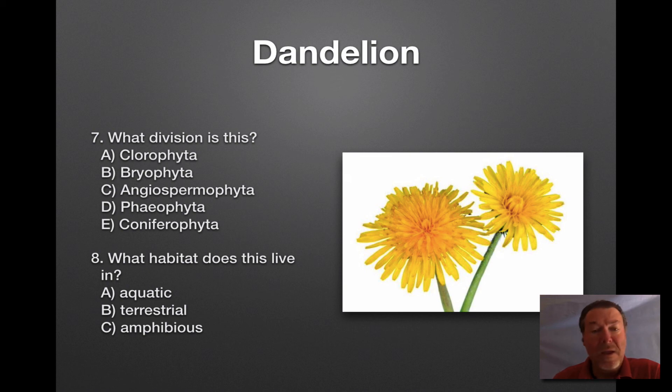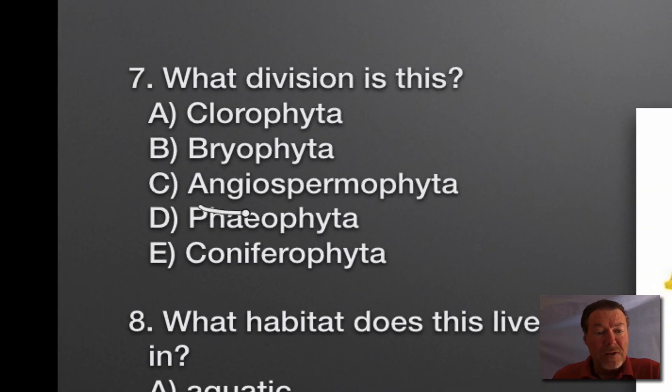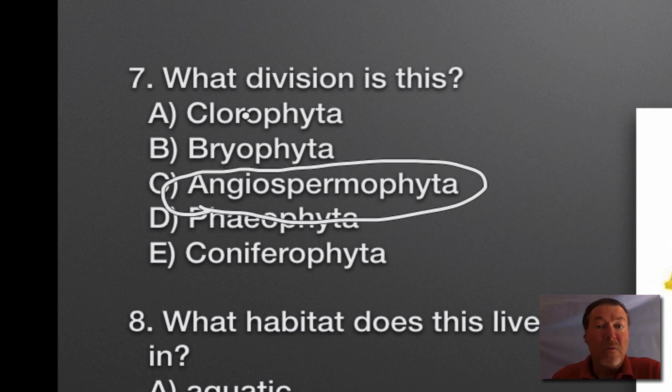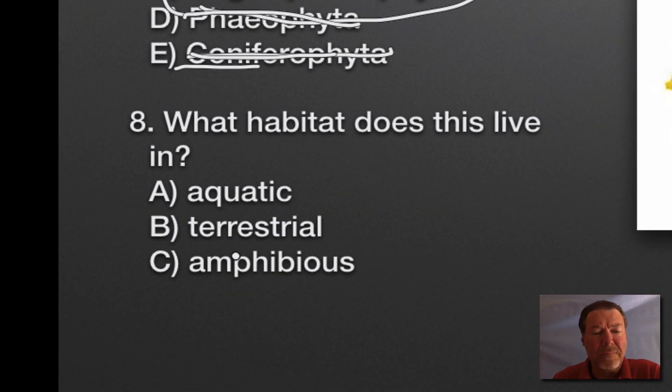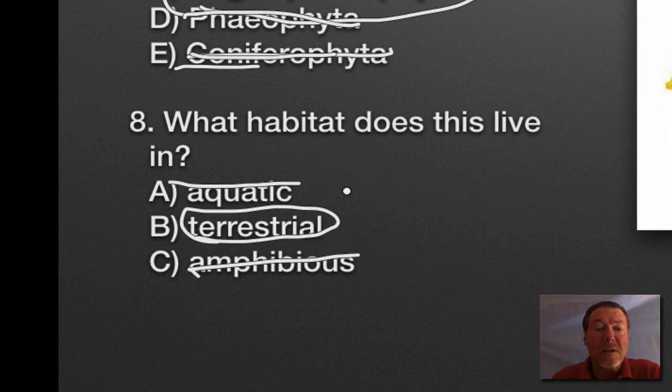We're talking about dandelion here. What division is this? The answer is C, Angiospermophyta. We can eliminate the others because Chlorophyta is green algae - green filaments or sheets, aquatic. Bryophyta is mosses and liverworts - doesn't have a true root system. Phaeophyta is brown algae, kelp. Coniferophyta has the word cone in it - pine trees. What habitat? Almost all plants are terrestrial. They're not aquatic and not amphibious. Just think all plants are terrestrial.